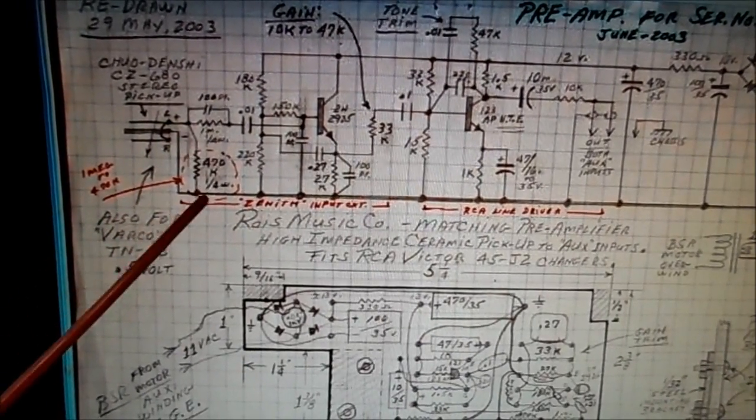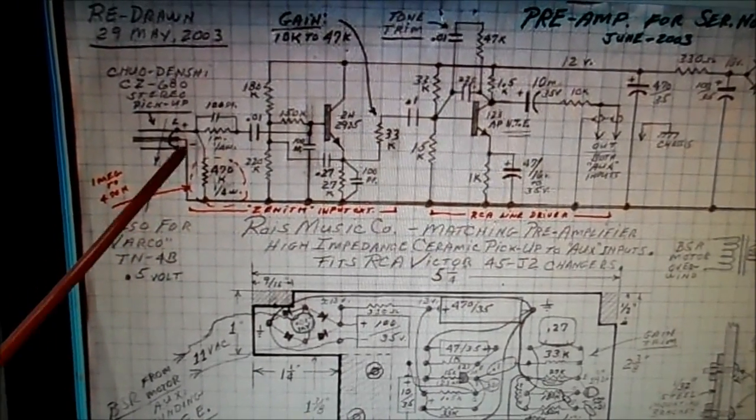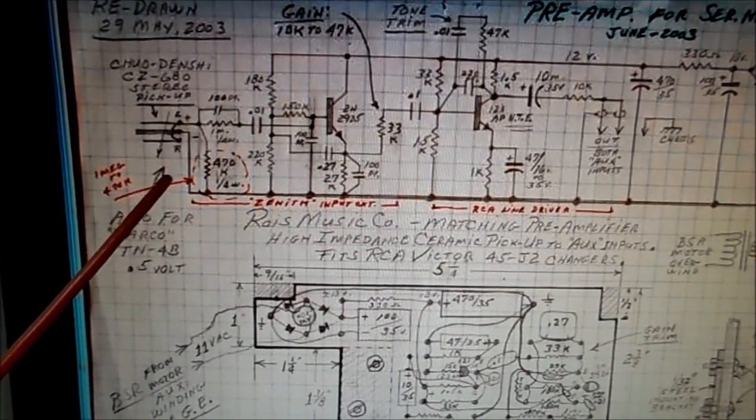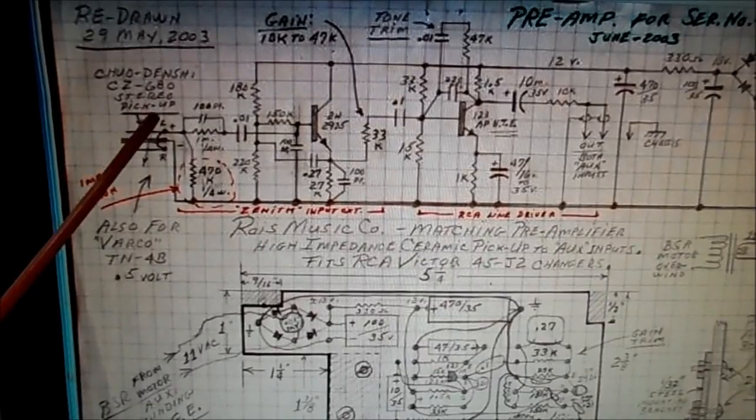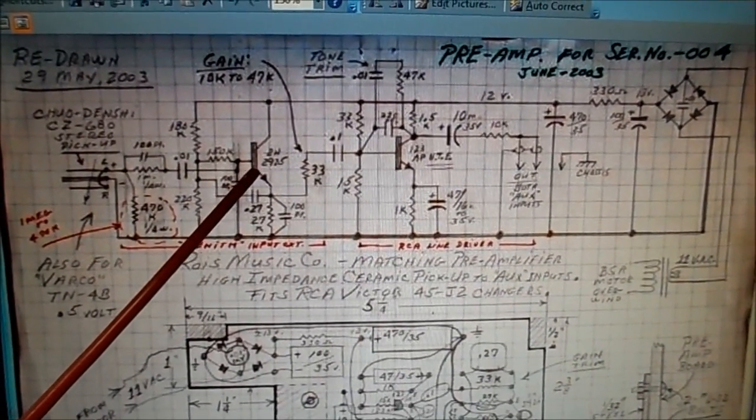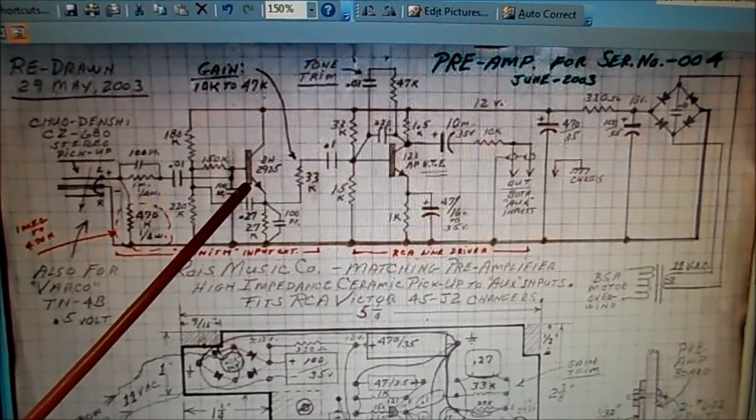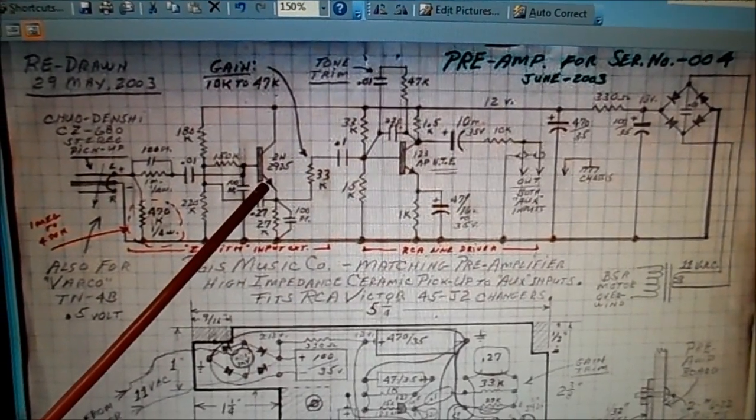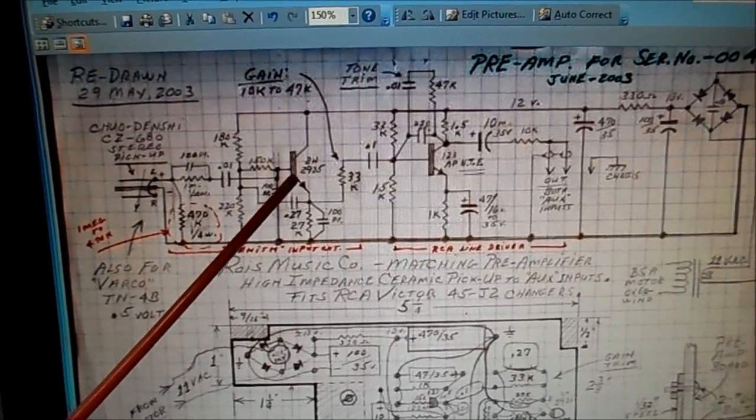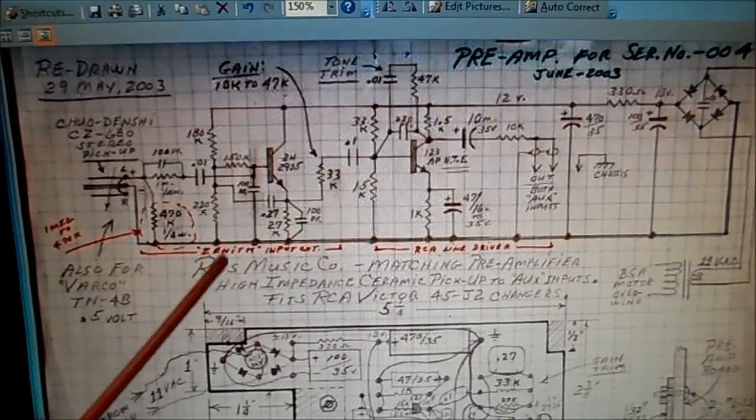This is for allowing the high frequencies to pass through, the 100 picofarad. This cap here that's circled, this resistor here that's circled in red, this loads down the cartridge. That's why it's 1 megohm to 470K. You have to load the cartridge down a little bit. In his case, he used the 2N2925. I believe he had an endless supply of these metal transistors.